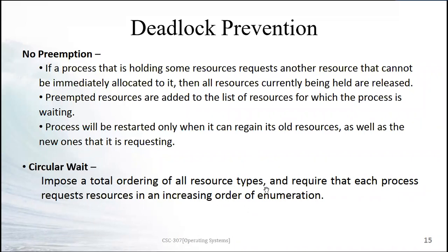To prevent circular wait, the operating system imposes a total ordering of all resource types and requires each process to request resources in an increasing order of enumeration. Just like traffic signals manage road flow, this rule ensures no circular dependency forms. Processes must request in order P1, P2, P3, P4 and so on, with real process IDs often numbering in the thousands.